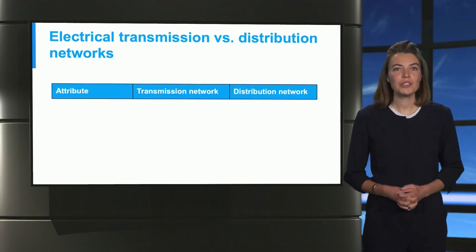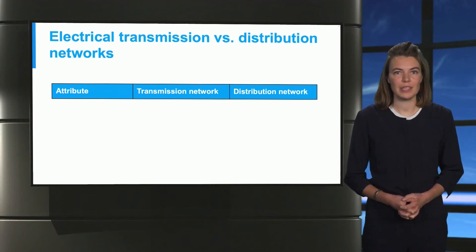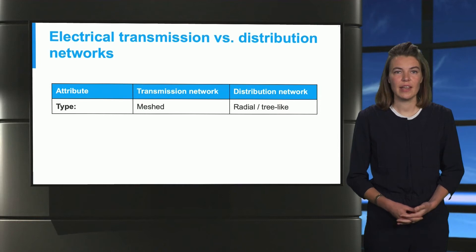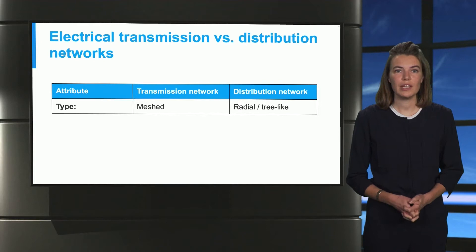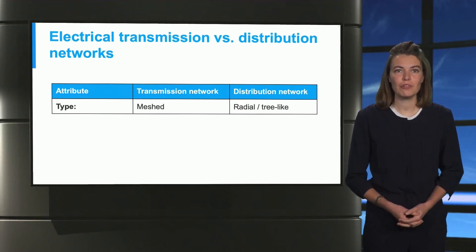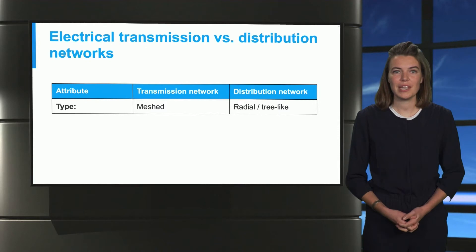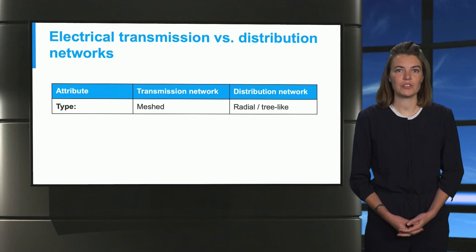Now let us focus on the main differences between these two networks. A transmission network has more of a mesh structure, which means that the cities through which the electricity flows are interconnected, ensuring reliability. On the other hand, the distribution network is more localized — for example, the street or neighborhood of a particular city. Here you have one connection point and energy is stepped from this point and transported downstream. This is termed a radial or tree-like network structure.